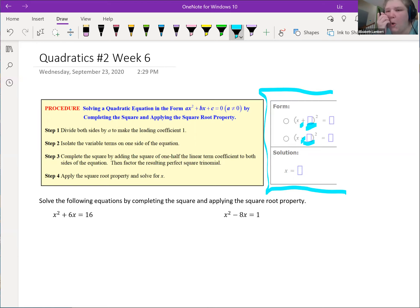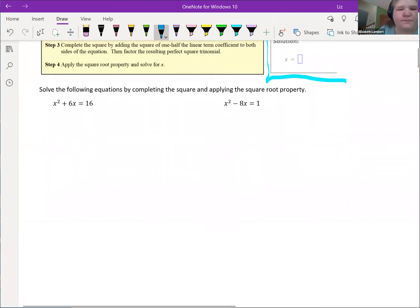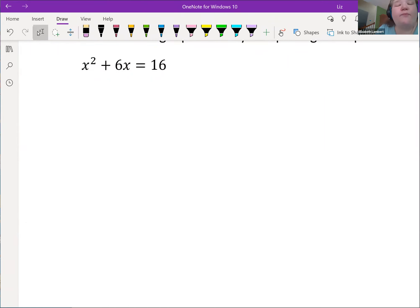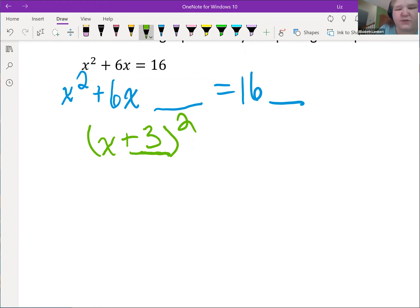All right. So completing the square, we kind of previewed this a little as long as a is one. We look at our b number and we're going to focus in on that. So my square number here, let me rewrite it again. x² + 6x, I'm going to put a blank and the same blank. So I want to figure out one number I put here that's going to complete this so that I can turn this into one thing squared.